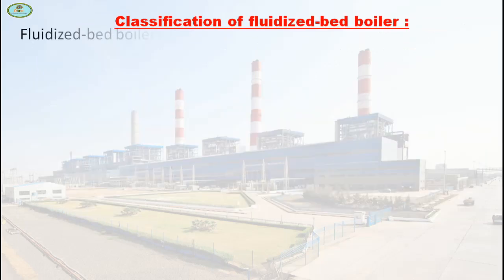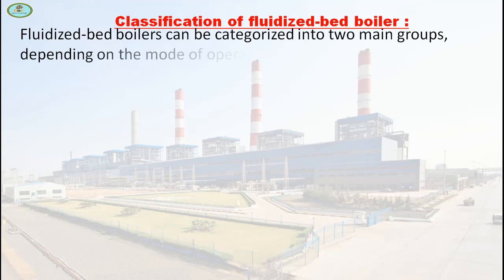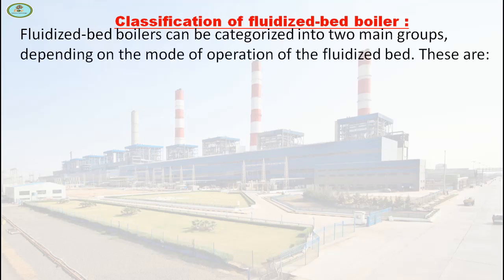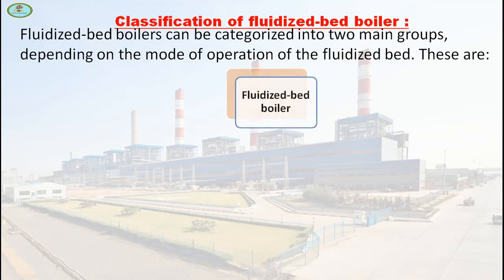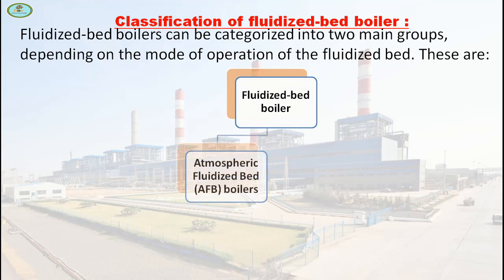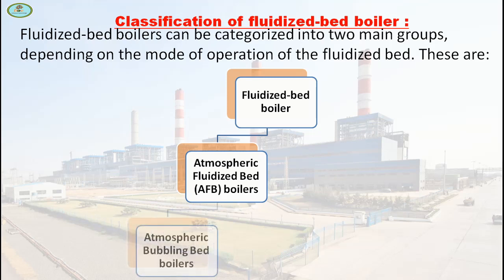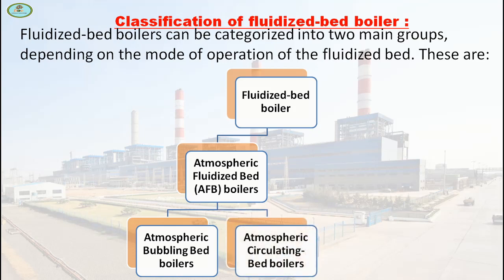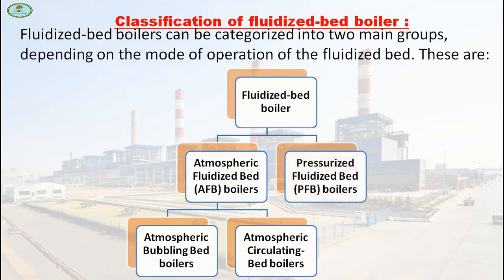Fluidized bed boilers can be categorized into two main groups, depending on the mode of operation of the fluidized bed. The first is atmospheric fluidized bed boiler, which is further classified into two categories: atmospheric bubbling bed boiler and atmospheric circulating bed boiler. The second is specialized fluidized bed boiler.